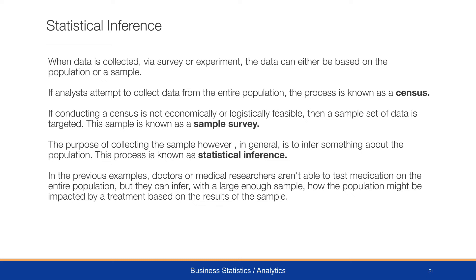If an analyst attempts to collect data from an entire population, we know this as a census — what happens in the US government every 10 years when they try to count every single person. But if it's not economically or logistically feasible, as the census is a very expensive process, then a sample set of data is targeted, known as a sample survey. The purpose of collecting the sample, however, is generally to infer something about the population, and this process is known as statistical inference.